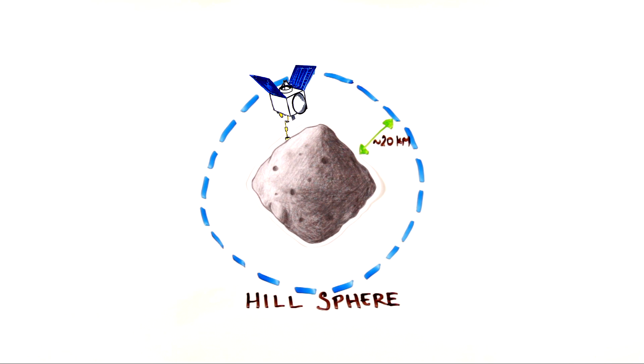OSIRIS-REx, however, will be operating in a micro-gravitational environment. This means that substantial changes in the OSIRIS-REx trajectory require only small amounts of fuel, which helps OSIRIS-REx to view Bennu from many different locations.